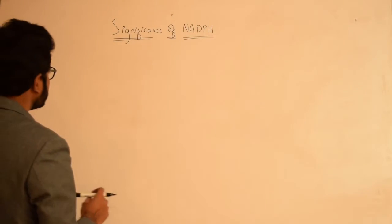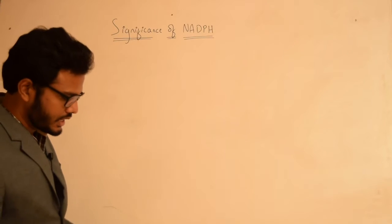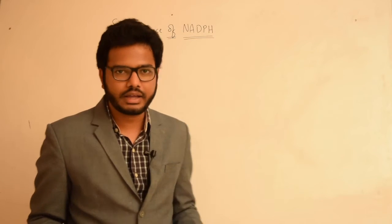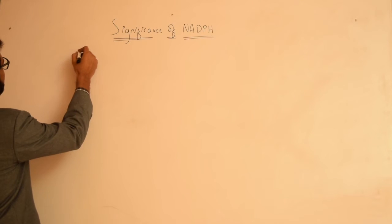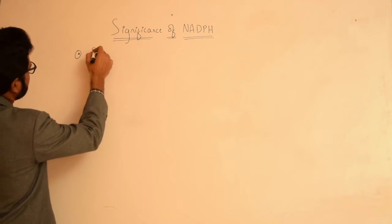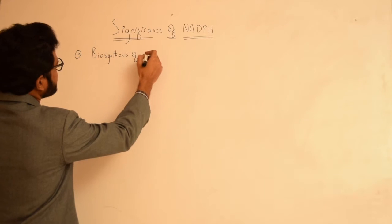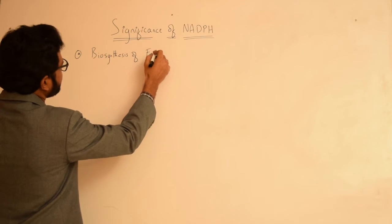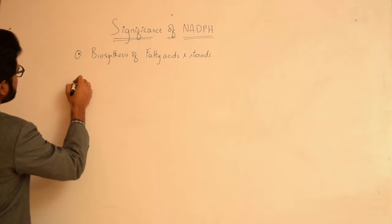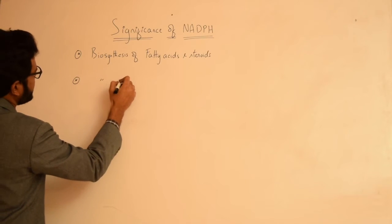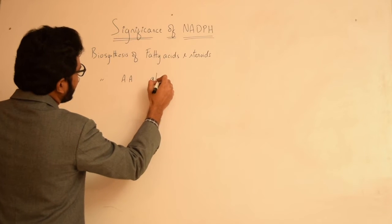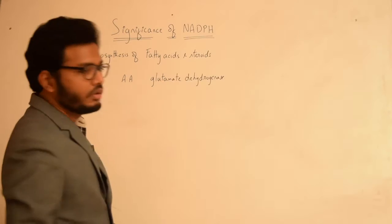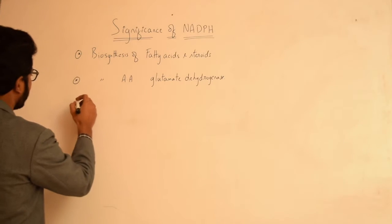As mentioned in the previous video while discussing HMP shunt, NADPH is essential for biosynthesis of various fatty acids as well as steroids. NADPH is also essential for biosynthesis of amino acids involving the enzyme glutamate dehydrogenase.